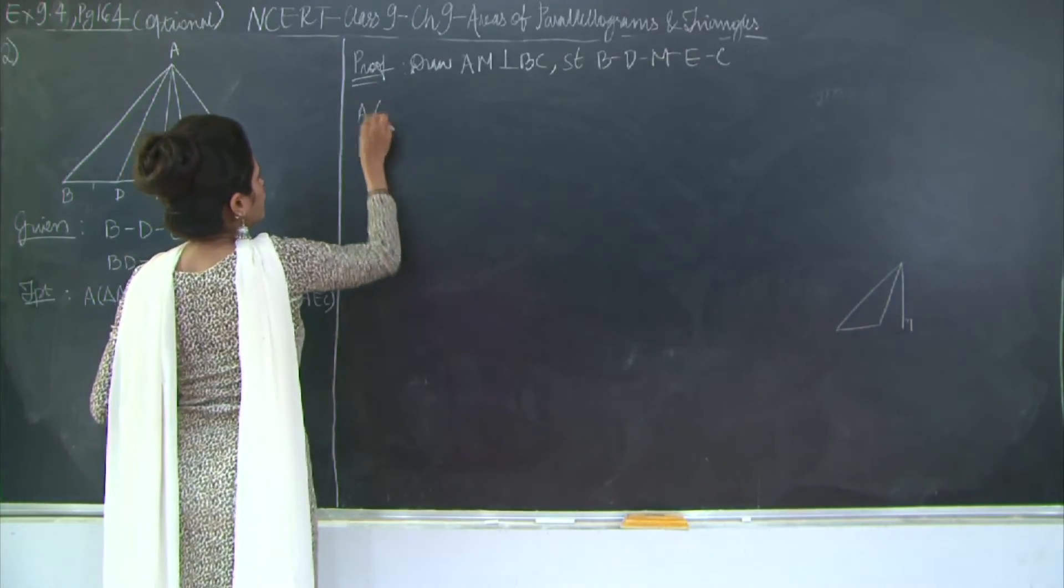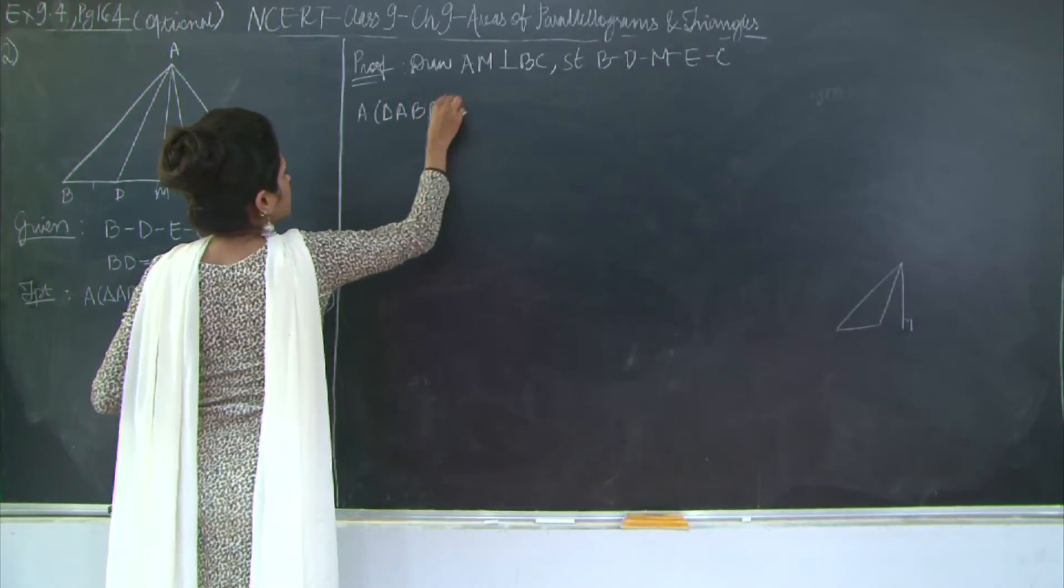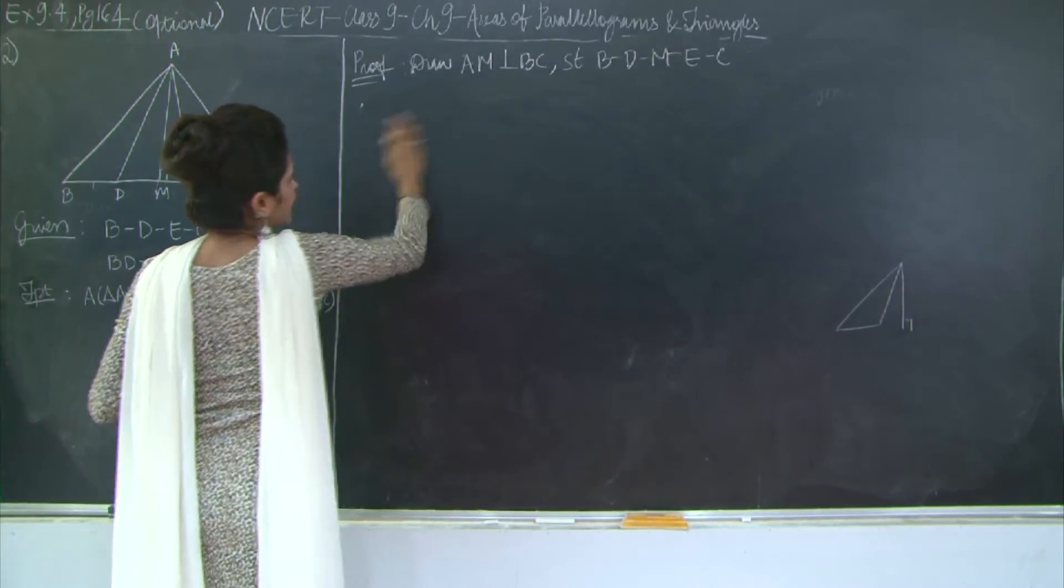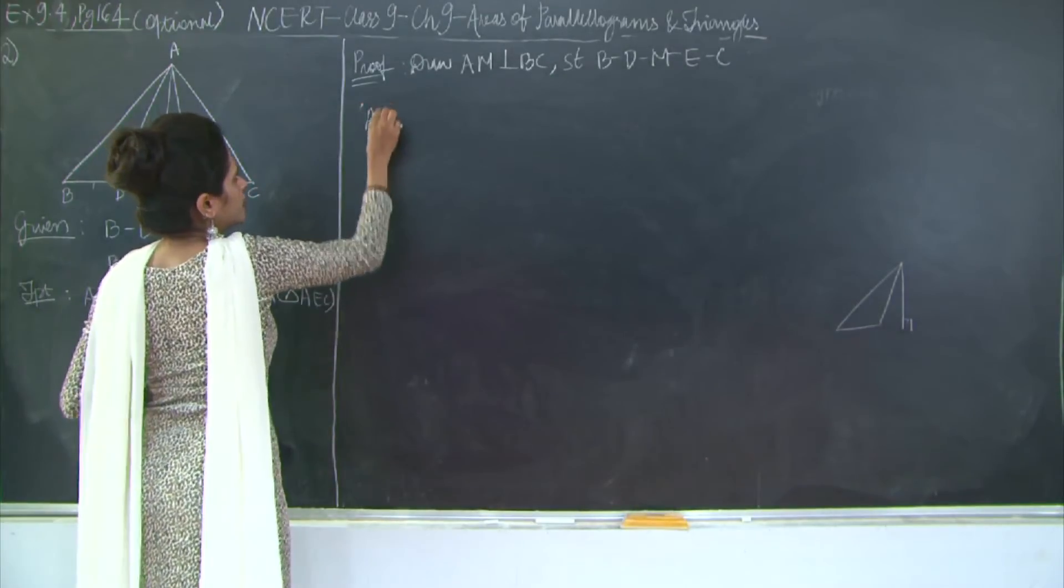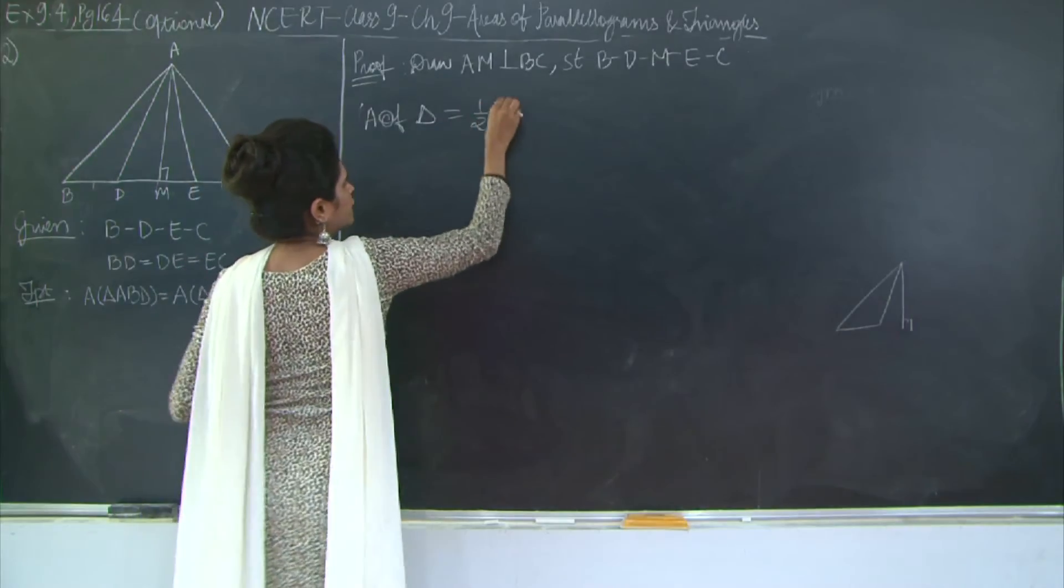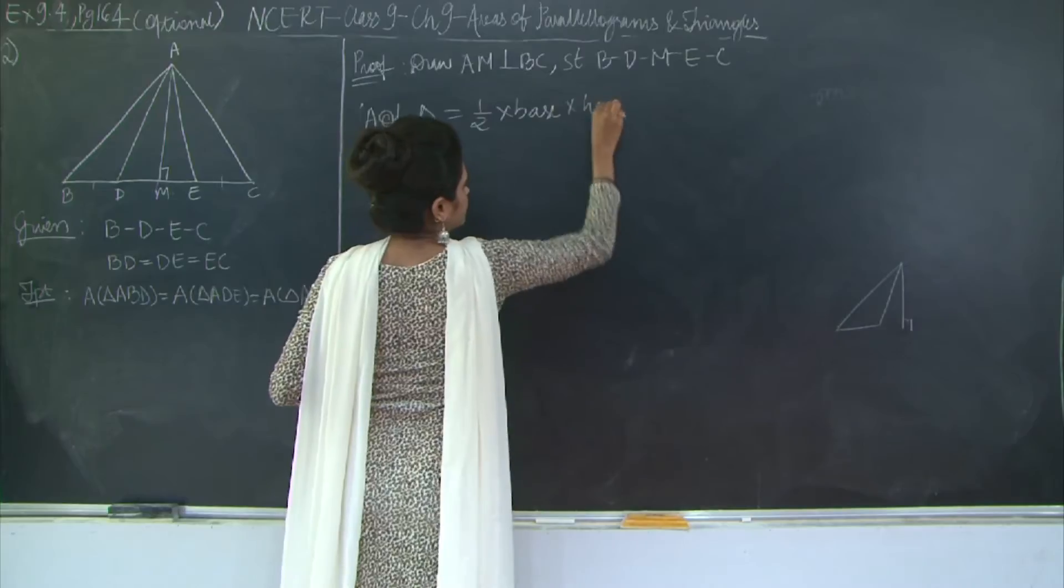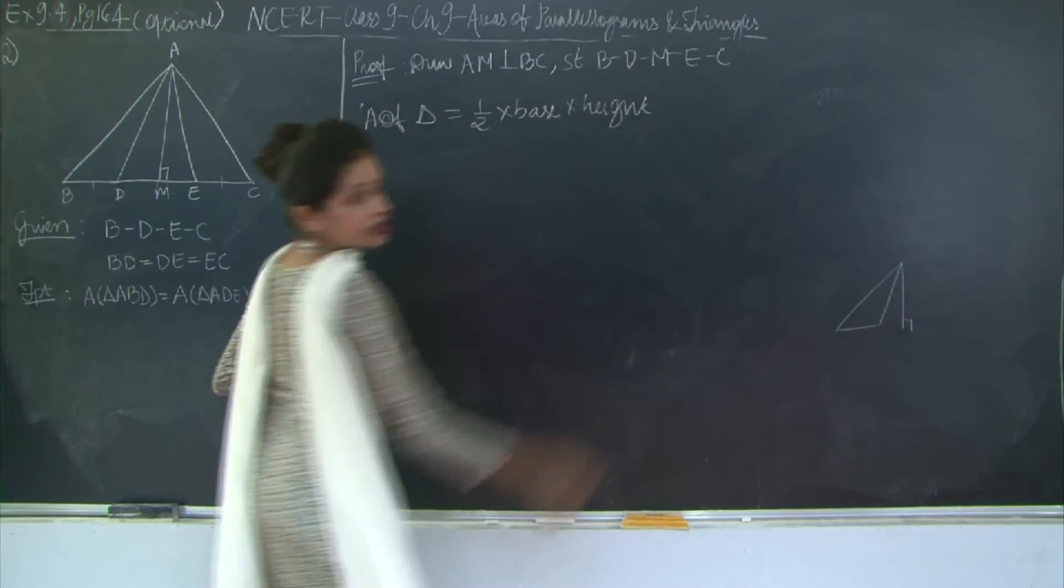Now area of triangle ABD. First let's just write the generic statement for area of triangle. We know that area of triangle is given by half into base into height.